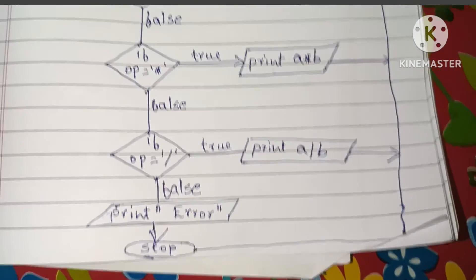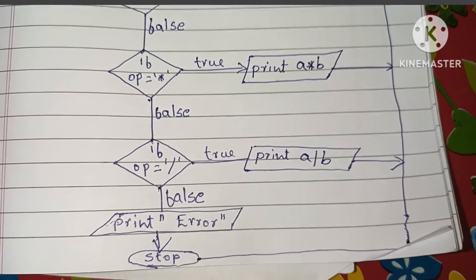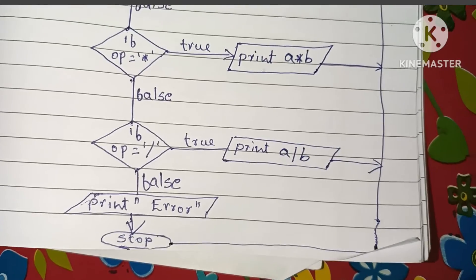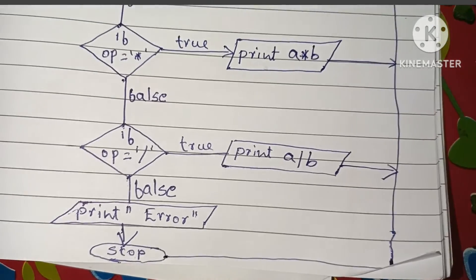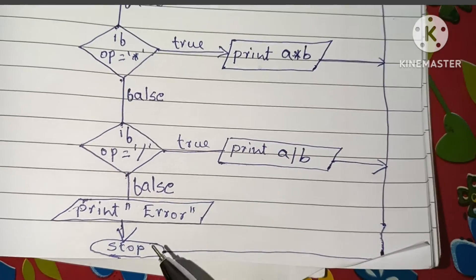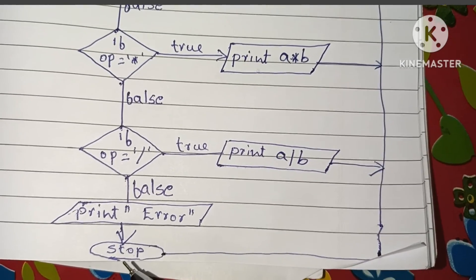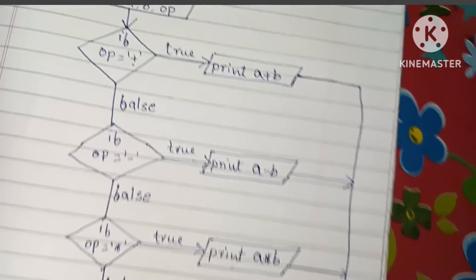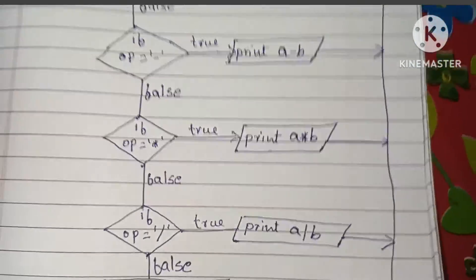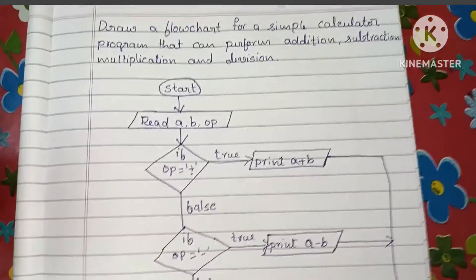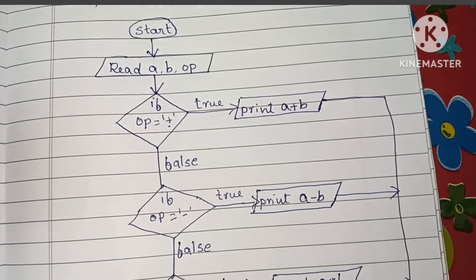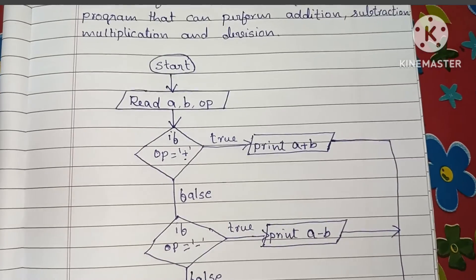If none of the operations match — addition, subtraction, multiplication, or division — it will print an error message. Finally, we stop the flowchart using the stop statement, and all outputs are connected to it. This is the complete flowchart. Thank you so much for watching — please like and subscribe to my channel!